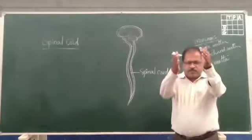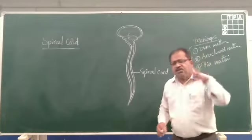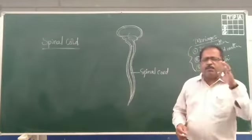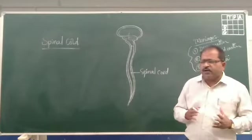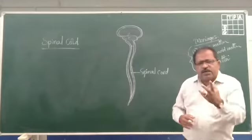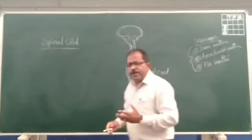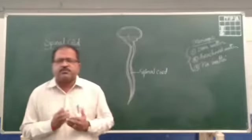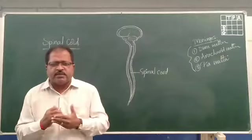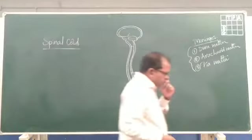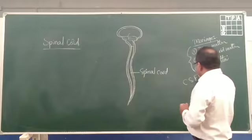So the spinal cord as well as the brain will be supported by these meninges. These will protect the brain and spinal cord, especially from external injury as well as shocks. And in between these layers, the space which is present there is filled with a fluid-like structure called CSF.